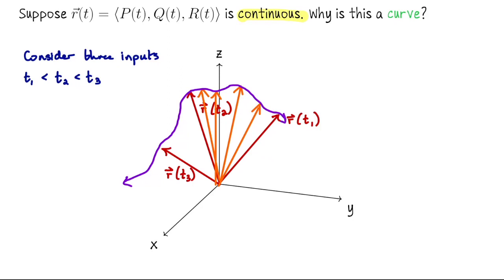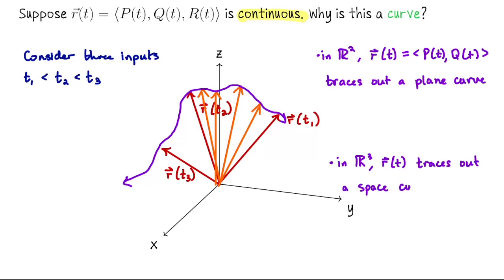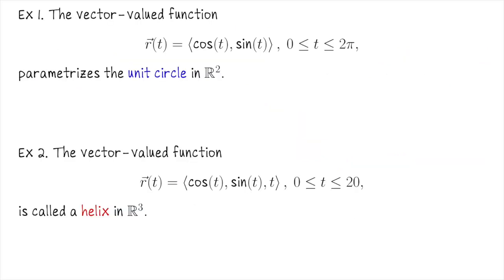So the vectors given to us by r(t) trace out a curve. In R², we call this a plane curve. In R³, we call it a space curve. And of course, in either context, we can just call it a curve. Now let me switch over to a MATLAB demonstration of these vector-valued functions tracing out familiar curves.